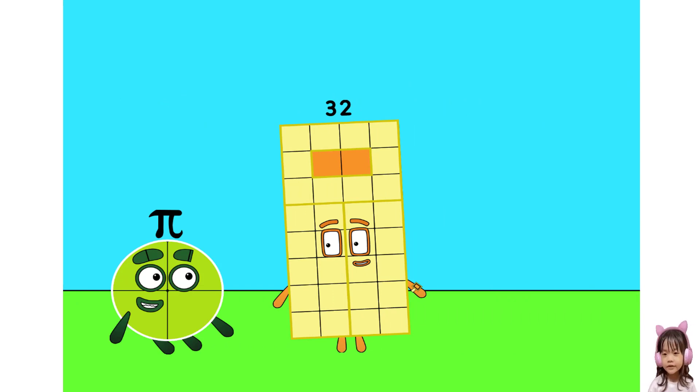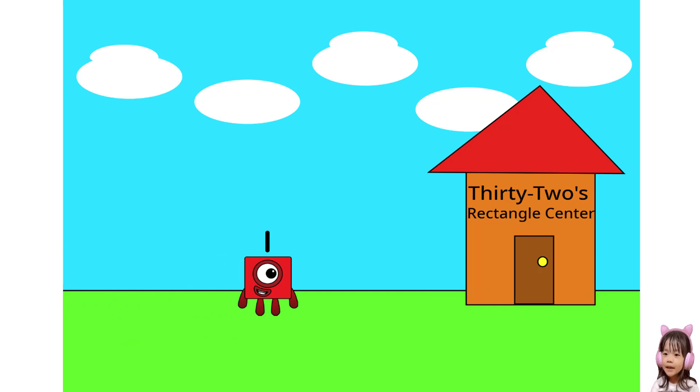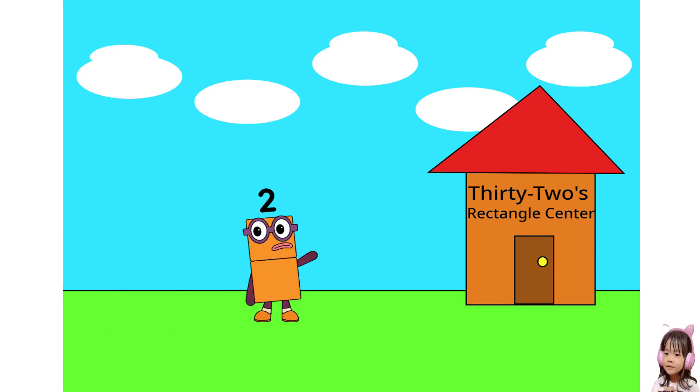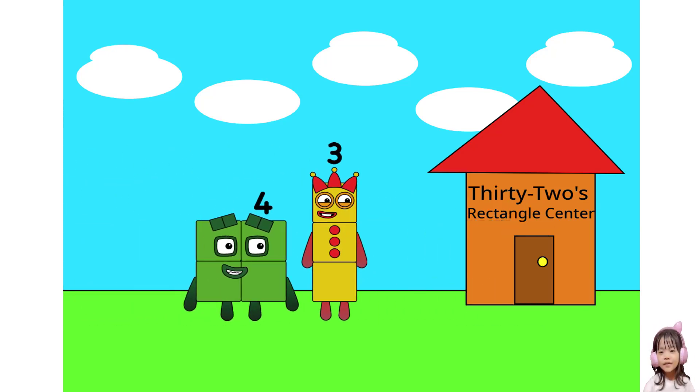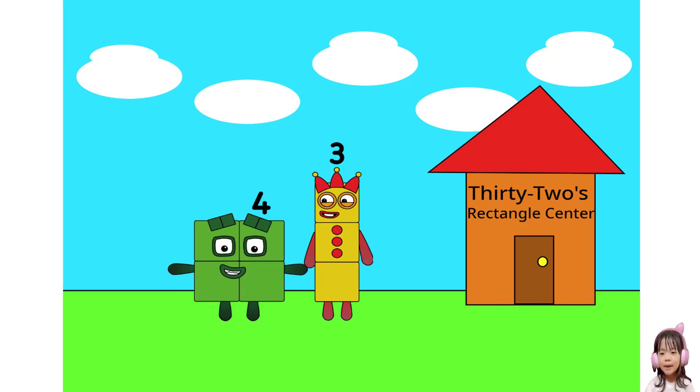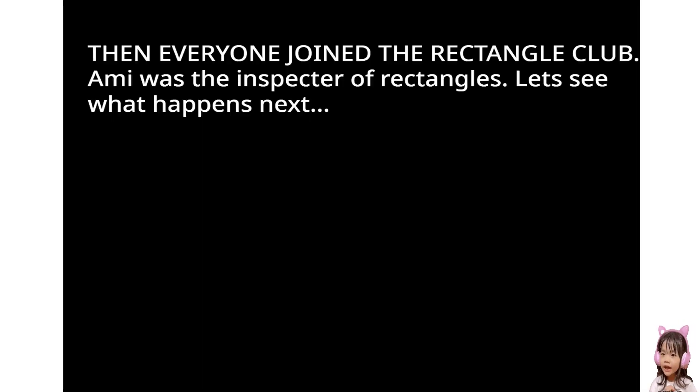Oh, hi 32. Wow, is that a rectangle center? Maybe I should go in. Wow, a rectangle center. But I only have two factors. But oh well. There it is 4. The rectangle center. I have two factors. But that's okay. And I am a 2 by 2 square. How wrong could it be? Then everyone join the rectangle club. Ami was the inspector of rectangles. Let's see what happens next.